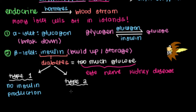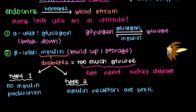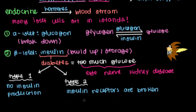In type 2 diabetes, insulin is being produced, but the insulin receptors are broken. So even if insulin is produced and travels to where it's supposed to go in the body, the receptors will not respond — and it's as if we don't have insulin at all. We'll close our conversation on diabetes for now and revisit this later.